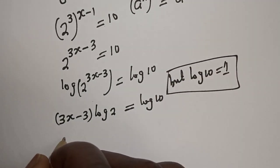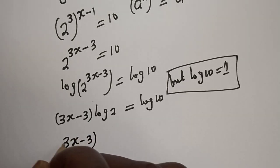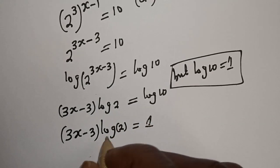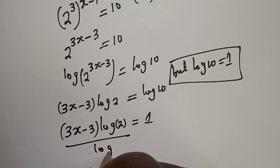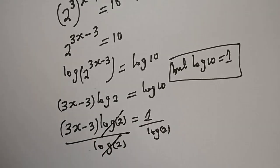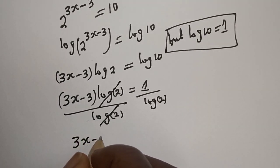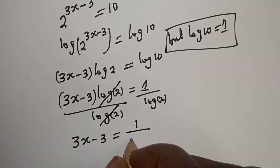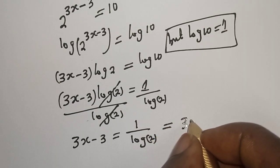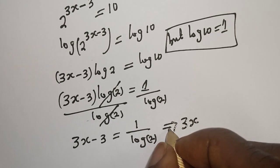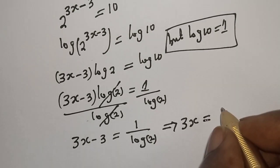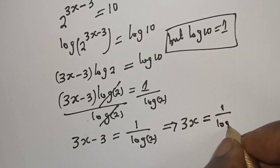Then here is 3s minus 3 times log 2 is equal to 1. Let's divide the variable side by log 2, divided by log 2. This will cancel, giving 3s minus 3 is equal to 1 divided by log 2. This implies that 3s minus 3 is equal to 1 over log 2.